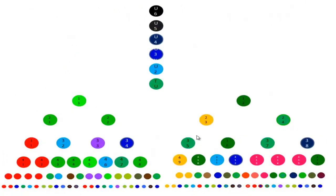Vamos a explicar cómo funciona la matriz para que entiendan la lógica de este sistema. Una vez que usted se inscribe, está por debajo de seis personas que están encima de usted, y va a comenzar con dos personas teniendo seis niveles por debajo: un primer nivel, un segundo nivel, un tercer nivel, un cuarto nivel, un quinto nivel y un sexto nivel. Se comienza con dos, después se va a cuatro, después a ocho, después a dieciséis, a treinta y dos y a sesenta y cuatro personas en el último nivel.